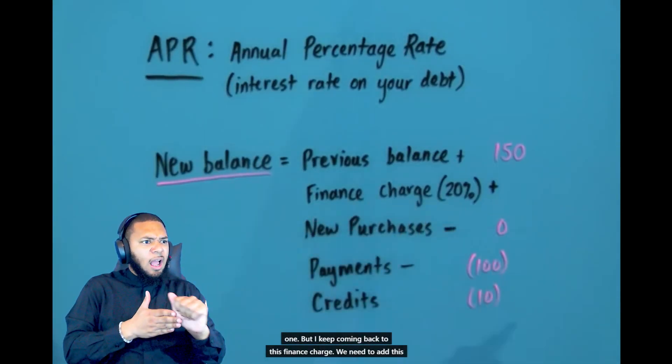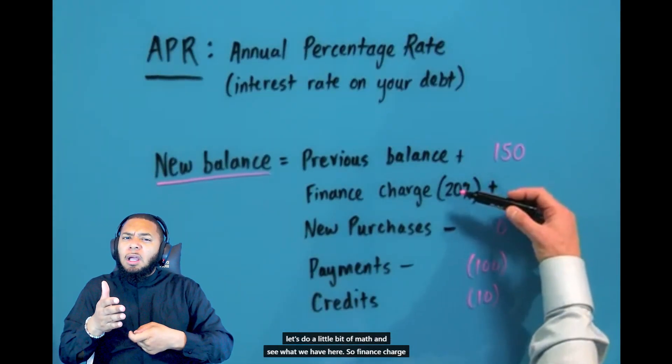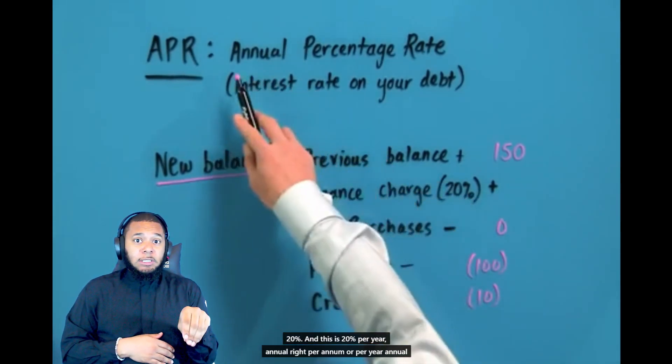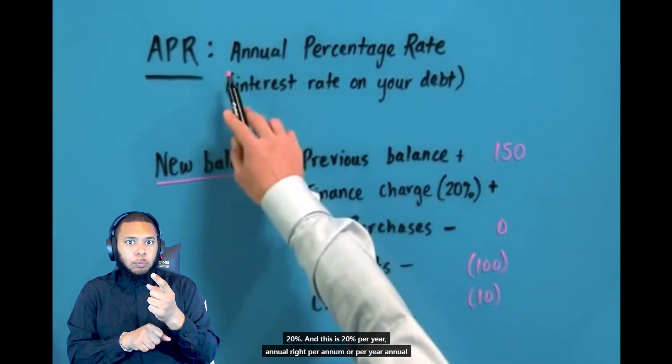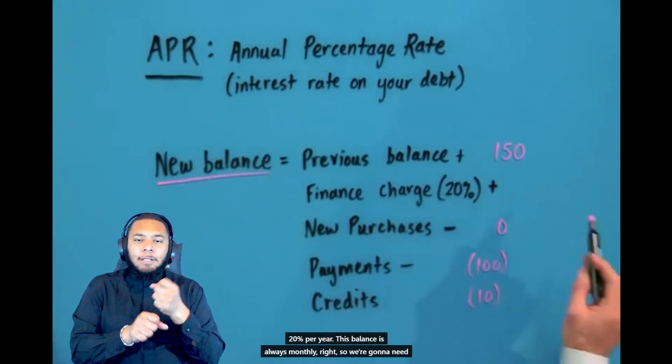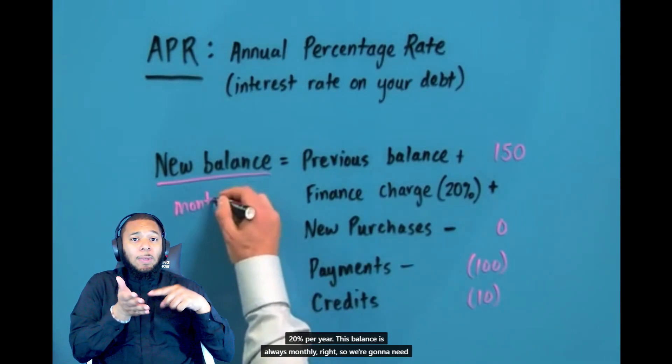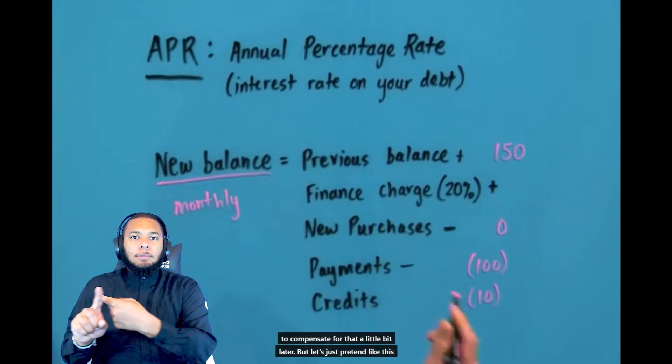But I keep coming back to this finance charge — we need to add this in. How do you calculate it? Is it gigantic? Is it small? Well, let's do a little bit of math and see what we have here. So the finance charge: 20% — and this is 20% per year, annual, per annum. This balance is always monthly, so we're going to need to compensate for that a little later. But let's just pretend like this is over the year and simplify for just a second.